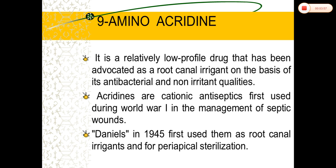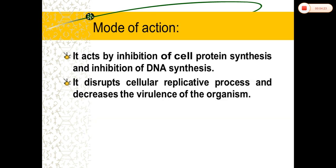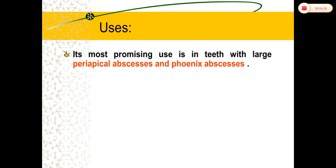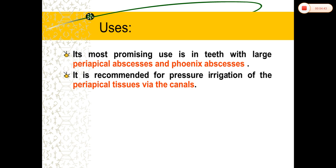Aminoacridine: it is a low-profile drug that has been advocated as a root canal irrigant based on its antibacterial efficacy and non-irritant potential. Acridines are cationic antiseptics used during the First World War. By Daniel, it is used as a root canal irrigant especially for disinfecting periapical lesions. Its mode of action is by inhibiting cell protein synthesis and DNA synthesis of microorganisms, disrupting the cellular replication process and decreasing the virulence of the microorganism.